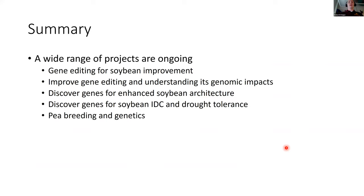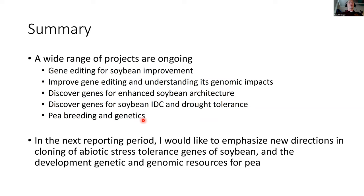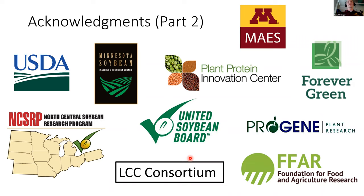To wrap up, we have a wide range of ongoing projects: gene editing for specific trait improvement, gene editing for understanding genomic impacts and improving methodology, gene discovery for architecture traits, gene discovery for IDC and drought tolerance, and development of a pea breeding and genetics program. In this reporting period and the next — using a five-year window — I want to emphasize new directions in cloning abiotic stress tolerance genes in soybean and developing pea programs relevant to Minnesota growers in the future.